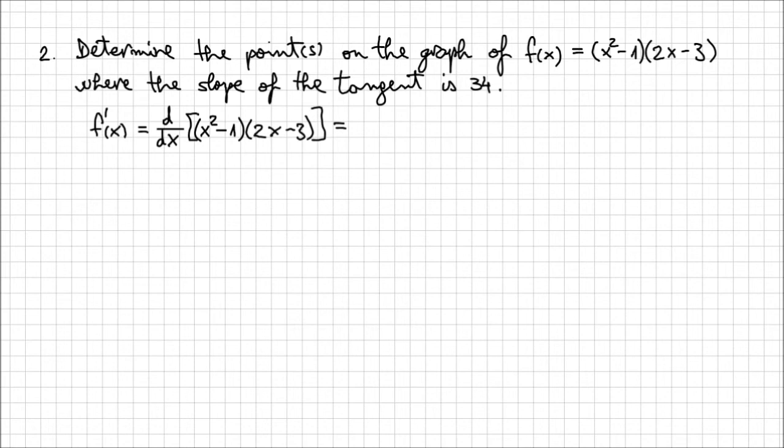Now, we cannot approach this product directly. What I'm going to do is expand this parenthesis. So this becomes d/dx of (2x³ - 3x² - 2x + 3). Now, this polynomial expression, we know very easily how to calculate, and I'm going to do it directly.